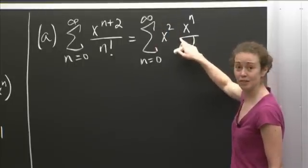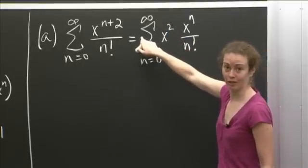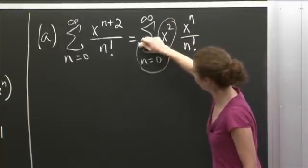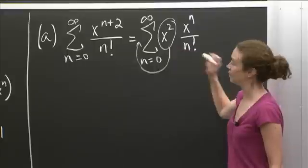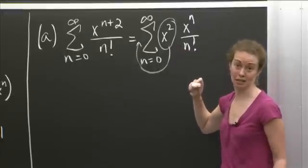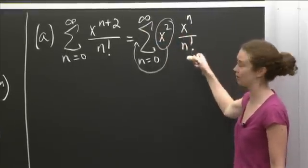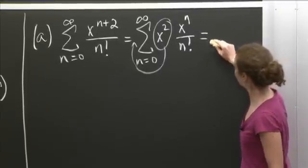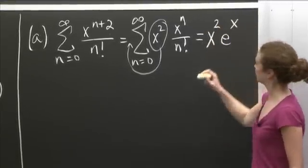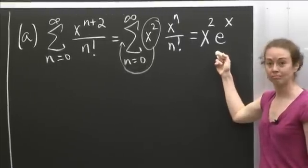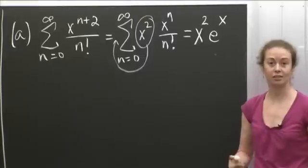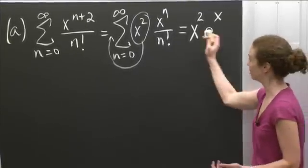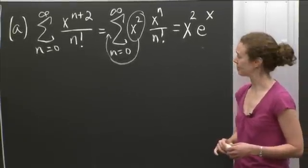So x squared times x to the n gives me the x to the n plus 2. But I can actually now, because this belongs to every sum, I can pull that all the way out in front. And if I pull that all the way out in front, if I move this out to the front, I have an x squared times this sum. Well, what is the sum? The sum is e to the x. It's n equals 0 to infinity of x to the n over n factorial. That's just e to the x. So this function is x squared e to the x. That's what a is. If you were worried about it, you could write e to the x as its series, and then you can multiply through by x squared and see if that's what you get. But you'll see that is indeed how this problem works.